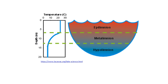We have three layers of the lake: the epilimnion, which is the outer layer with a warmer temperature; the metalimnion, or middle layer, which has a rapid change of temperature from warmer to colder; and the hypolimnion, or the bottom layer, which has a colder temperature.